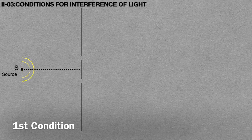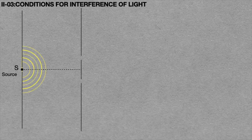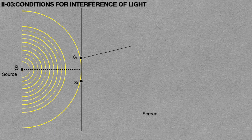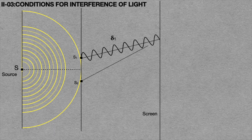The first condition is shown in this animation. First and foremost, we will consider Young's double slit experiment. In this experiment, the two sources S1 and S2 emerge from the main source S. Consider the light wave emerging from light source S1 containing phase difference delta 1, and also the light wave emerging from light source S2 containing phase difference delta 2.